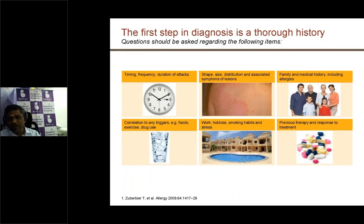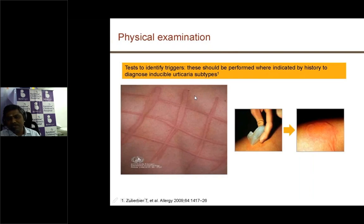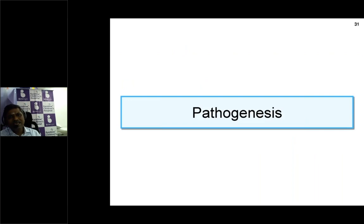When evaluating a child with urticaria, the key questions are: is it acute or chronic, how long do individual wheals last, is there hyperpigmentation on resolution, are there systemic symptoms, and are there triggers such as food, exercise, or drugs? Family history of atopy and personal history of allergies should be obtained. Dermatographism can be demonstrated physically; ice cube or hot water testing can provoke cold or heat urticaria. Systemic examination in chronic urticaria is usually normal.